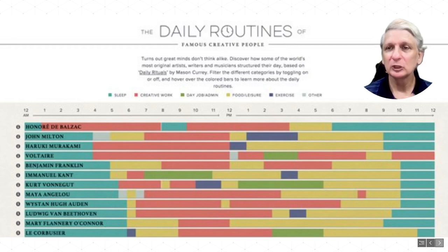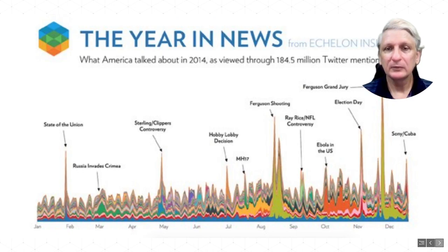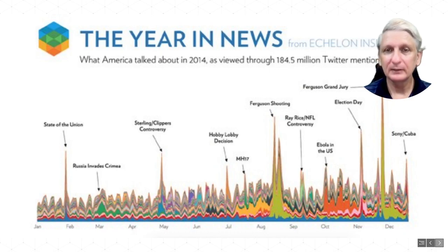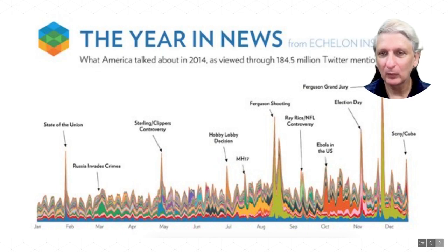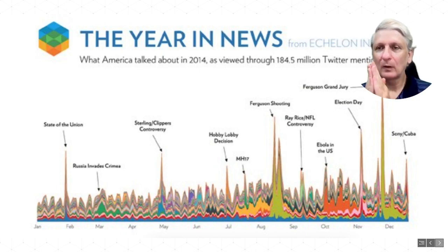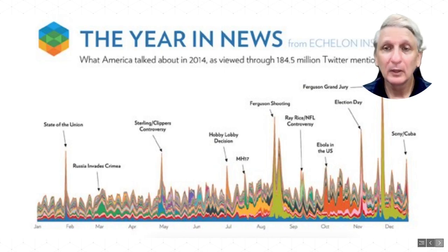Another one helps us look at trends — this is looking at 2014 and the number of tweets that mention different events. We can see that certain key things happen during 2014 from the peaks of Twitter activity. It's an easy data set to get access to and a way of analyzing the major events of 2014 based on responses that people have on that particular social media platform.